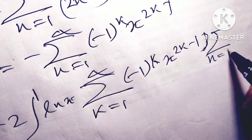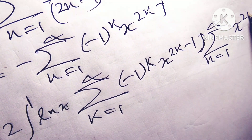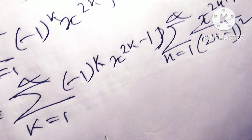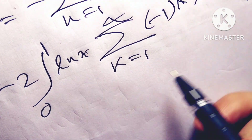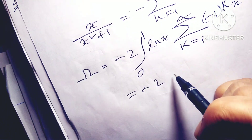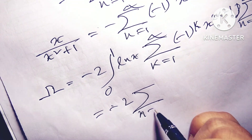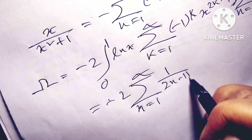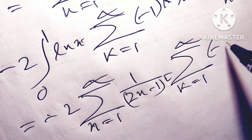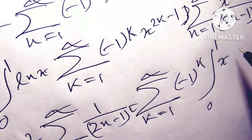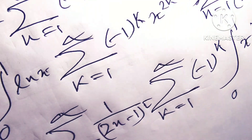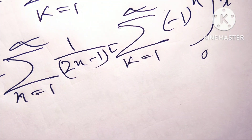Setting n = 2k-1 and combining with the summation n=1 to infinity of x^(2n-1)/(2n-1)², this becomes minus 2 times summation n=1 to infinity of 1/(2n-1)² times summation k=1 to infinity of (-1)^k times the integral from 0 to 1 of x^(2n+2k-2) dx.